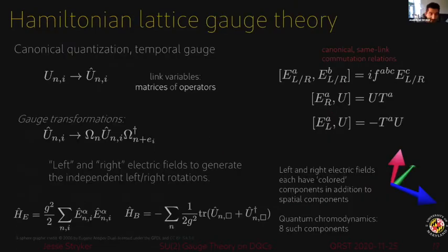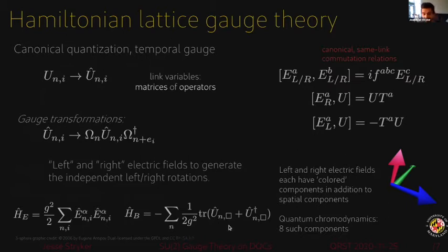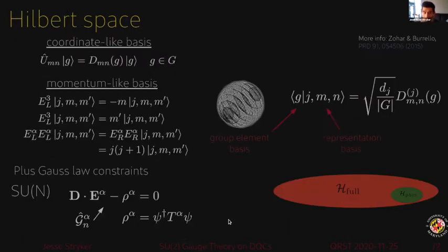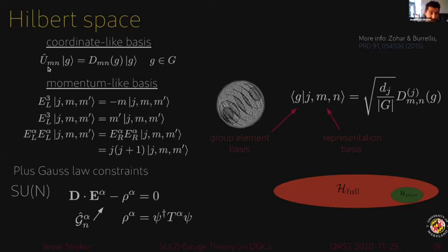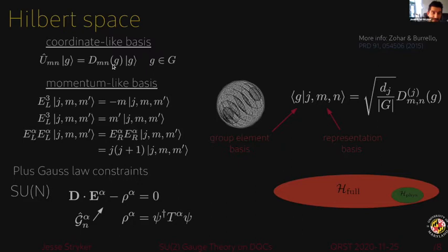The left and right electric fields have colored components as well as their spatial components. The Hamiltonian is formed by the gauge invariant Casimir, which results from contracting the electric fields with their color indices. The magnetic Hamiltonian has the same form that was seen in the Wilson action as before, except for now we only have spatial plaquettes. The Hilbert space that all of these operators act on - just looking at one link for now - these link operators are diagonalized by states which are parametrized by elements of the group, where the link operator acting on some group element state has eigenvalue which is a Wigner D matrix.